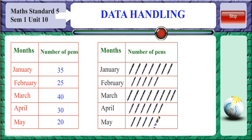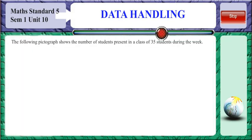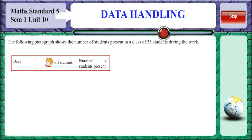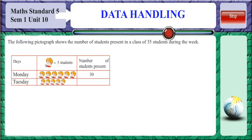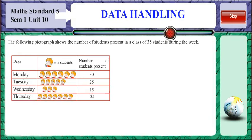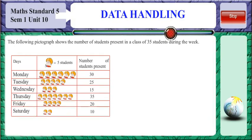Now let us see the interpretation of a graph. The following pictograph shows the number of students present in a class of 35 students during the week. Each picture represents 5 students. On Monday there are 6 pictures, which means 6 into 5 equals 30 students present. On Tuesday, 5 into 5 is 25 students present. And so on for Wednesday, Thursday, Friday and Saturday.